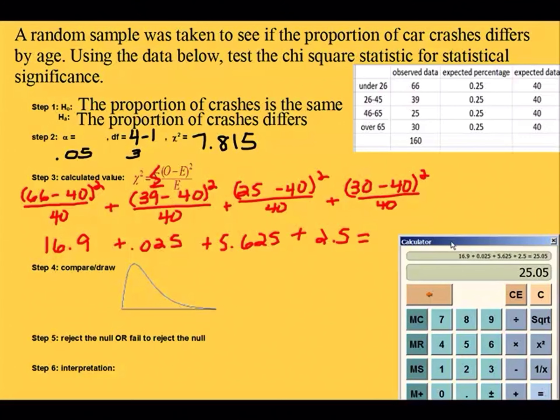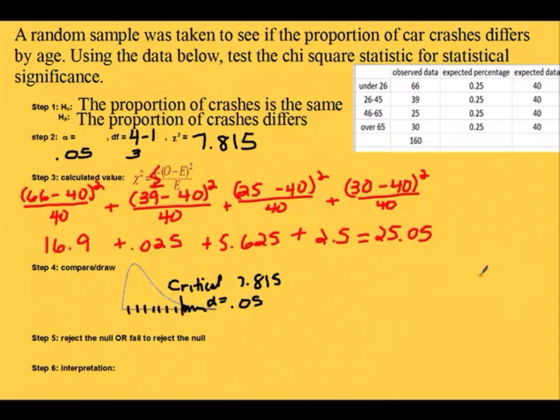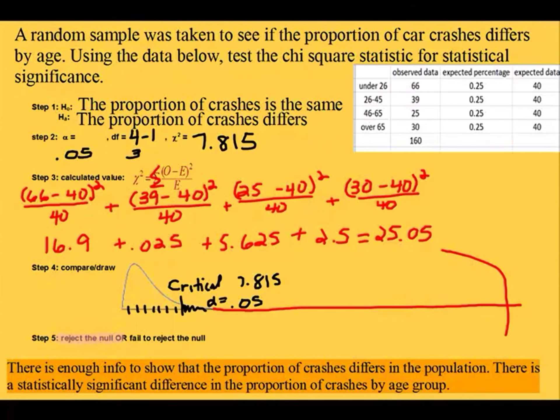My calculated chi-square value is 25.05. So in my picture, I want to compare them. My critical value was 7.815. This means that about 5%, the alpha value, is shaded for the rejection region. But my calculated value is way over here. Definitely in the rejection region. We will, in fact, reject that null. And so our interpretation, there is enough information to show that the proportion of crashes does differ in the population.